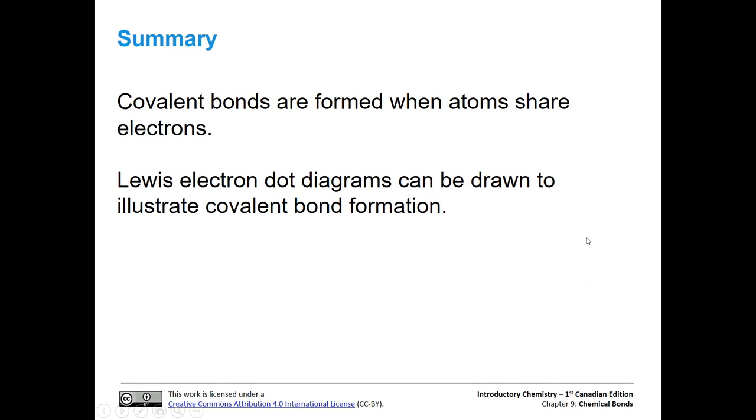In summary, covalent bonds are formed when atoms share electrons, and we can use electron dot diagrams to illustrate this covalent bond formation.